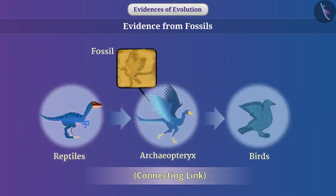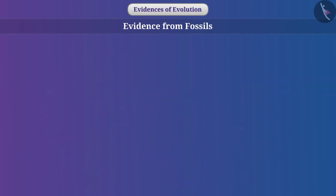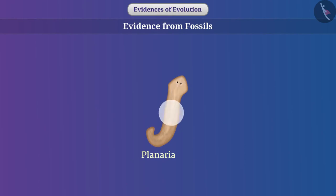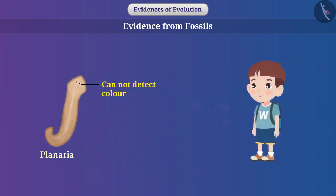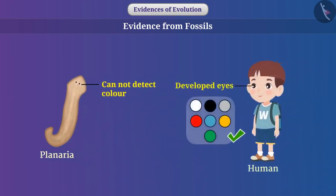Evolution is the result of bit-by-bit changes that happen over generations. For example, in planaria, an eye-like structure is present but it was very simple. The eyes of some animals cannot detect color. The eyes of human beings are much more developed compared to the eyes of these animals.